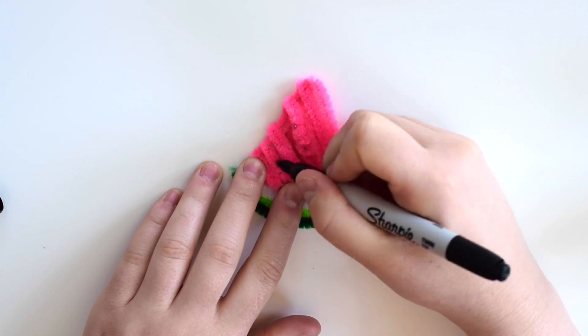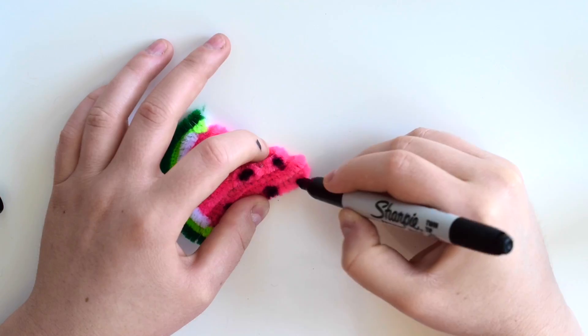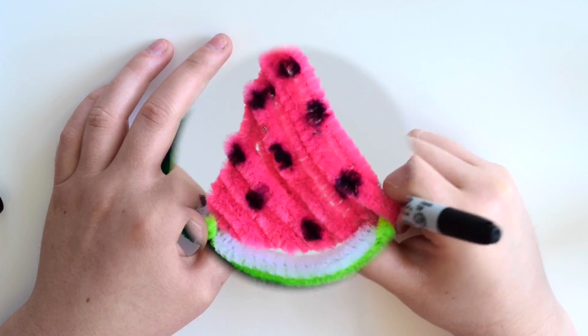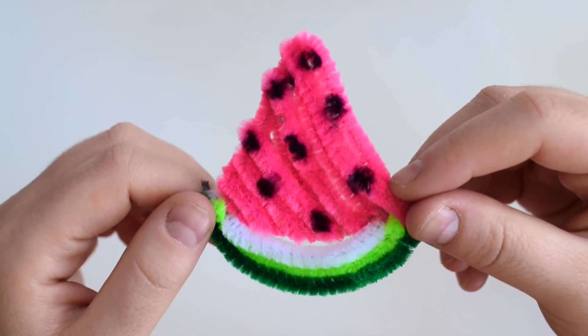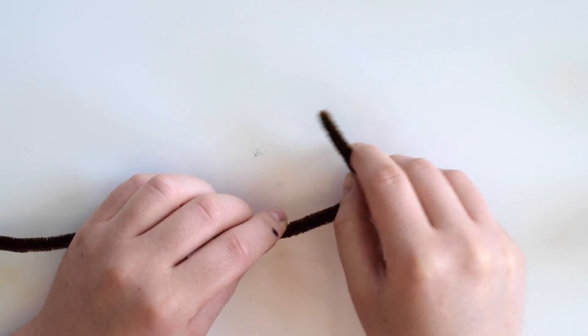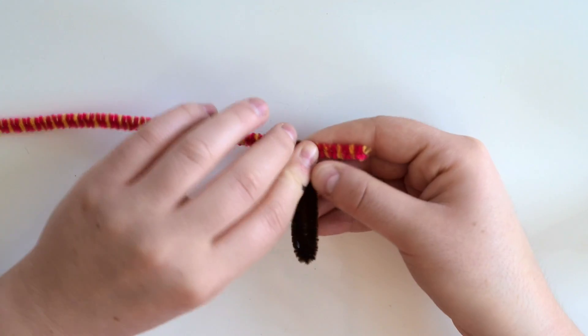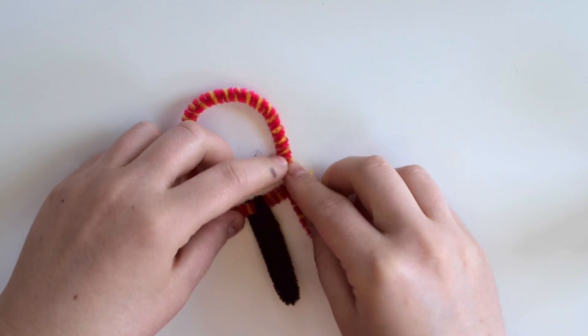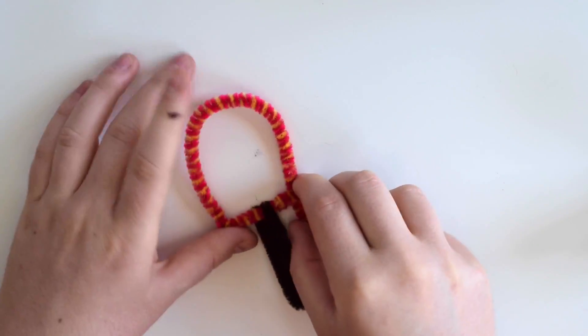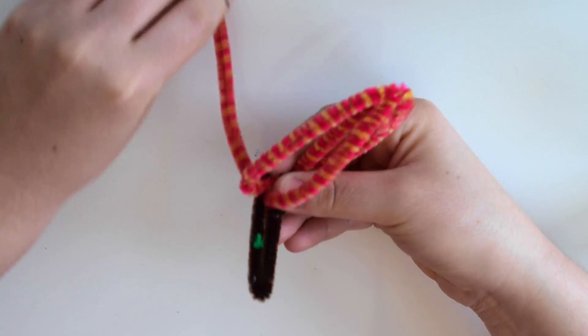For the seeds, use a black Sharpie to color in some dots. To make it double-sided, simply color in dots on both sides of the watermelon. Next is the popsicle. You'll start with the handle by folding a brown pipe cleaner in half and wrapping it around part of a colorful pipe cleaner. I had these fun multi-color pipe cleaners that I thought could be like a pink lemonade flavor.